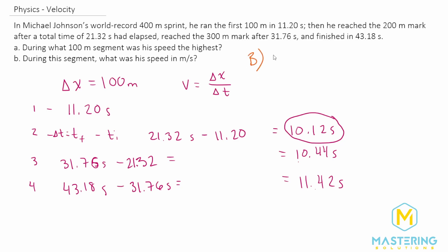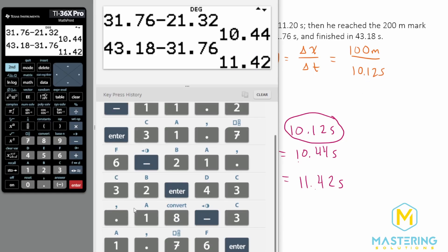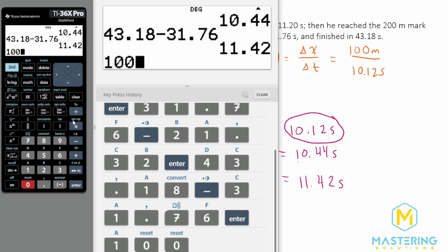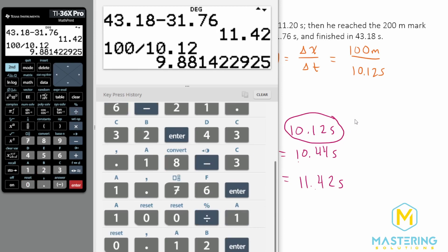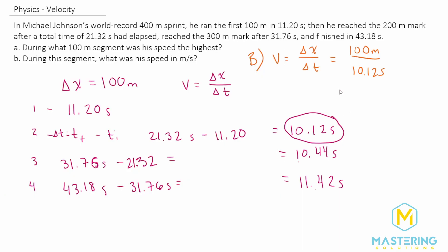So for part b the formula for velocity of course is delta x over delta t. We already know that the delta x is 100 meters and we just solved for the delta t which is 10.12 seconds. So we have 100 meters divided by 10.12 seconds and so we have a speed for part b of 9.88 meters per second.